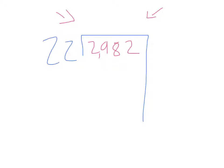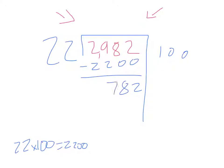How many times does 22 go into 2,000? Well, I know 22 times 100 equals 2,200. Let's start with that. Minus 2,200, now we have 782.